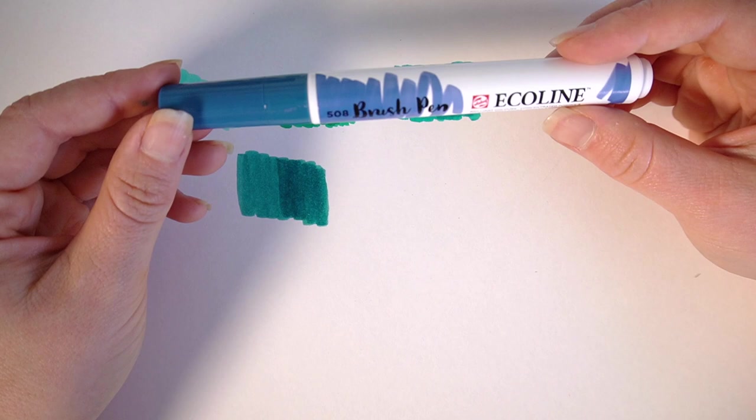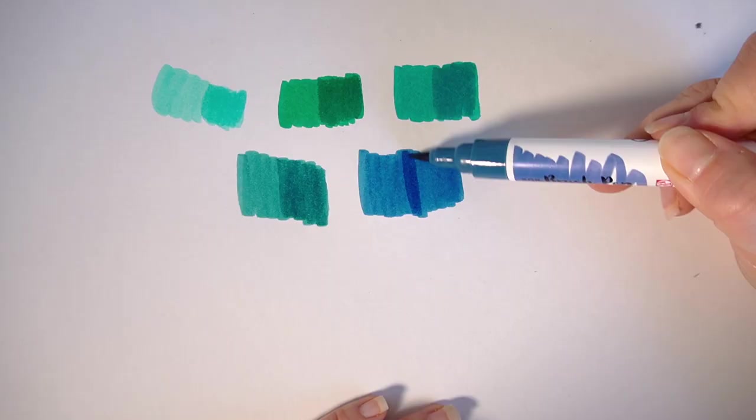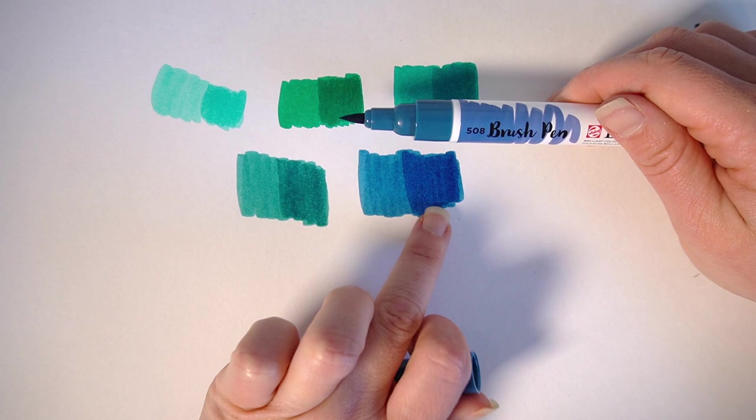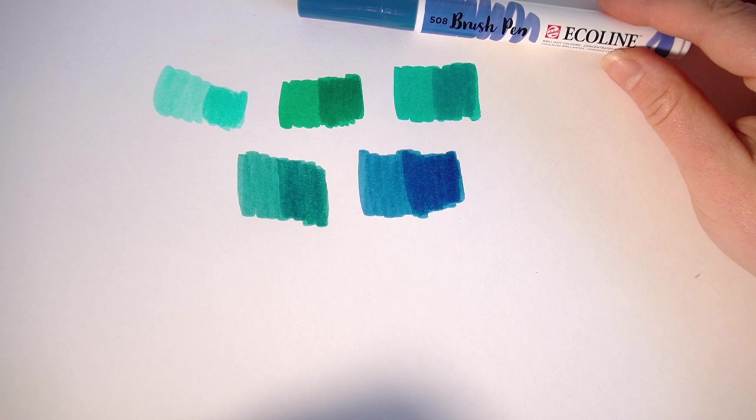Last one in the set is 508 and this is the Prussian blue. So with that second layer you do get a really nice deep blue. I think that the first layer is more accurate to the cap than the second layer because that does run quite dark. I think I'm going to have a lot of fun using these in some of my future videos.